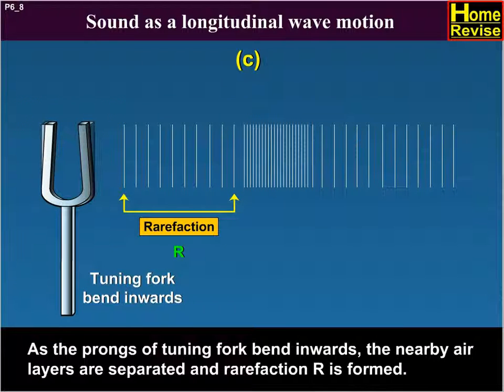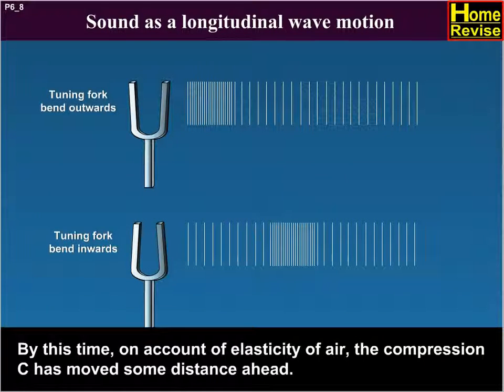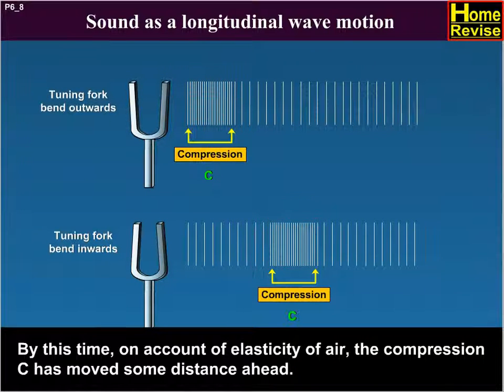As the prongs of tuning fork bend inwards, the nearby air layers are separated and rarefaction R is formed. By this time, on account of elasticity of air, the compression C has moved some distance ahead.